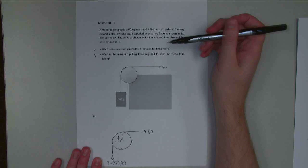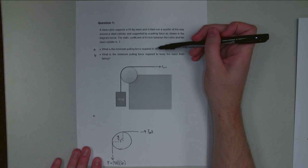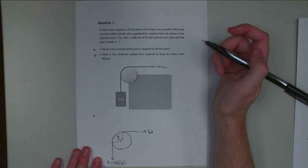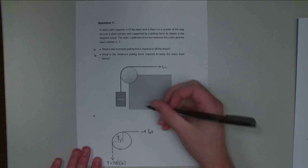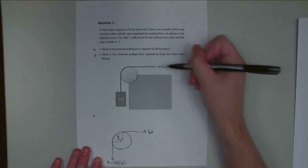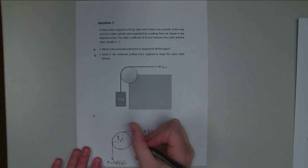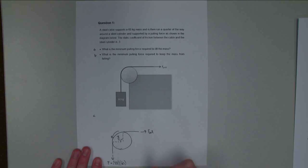If we think about situation one, what is the minimum required pulling force required to lift the mass, we can draw in which way the friction force is going. If I'm pulling this up, the cable up here is going this way, and the friction force is going to be opposing that. The friction force, if it's moving up, is going to be pulling the whole thing down.